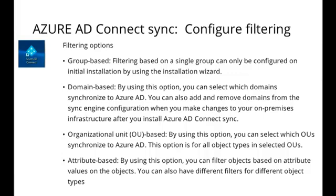By using filtering, we are going to be able to control which objects appear in Azure Active Directory from our on-premise Active Directory environment. The tool that we're going to use to synchronize objects from the on-premise Active Directory to Azure Active Directory is known as the AD Connect tool. This tool can be downloaded from the Microsoft site. When you run this tool for the first time, the default configuration takes all objects in all domains in the forest and syncs those objects to Azure Active Directory.